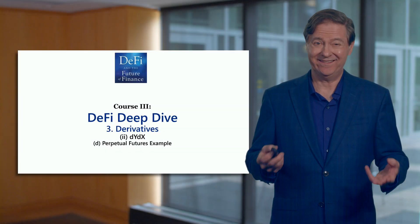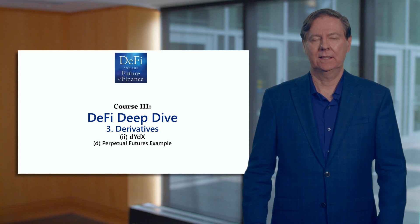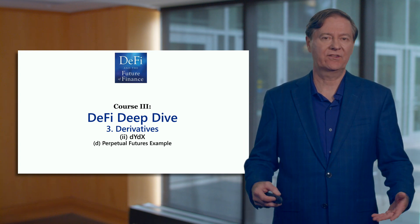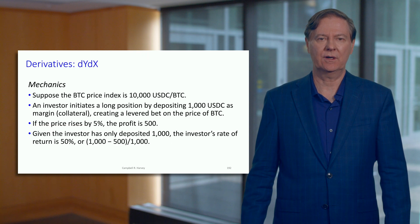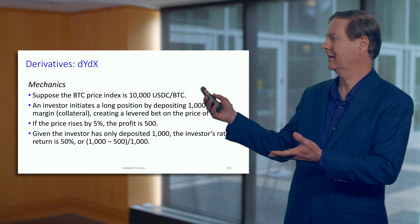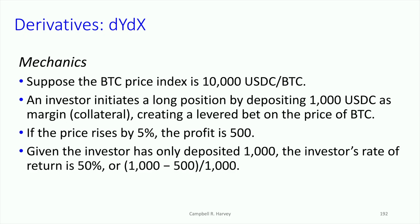Let's do an example of how perpetual futures actually works. We'll go through a stylized example and look at the mechanics. Bitcoin is worth 10,000 USDC, which means $10,000. An investor is going to initiate a long position by putting 1,000 USDC as collateral. So this is a levered bet. If it was unlevered, the investor would deposit 10,000 USDC, but they're only depositing 10%.